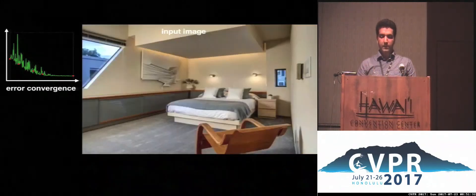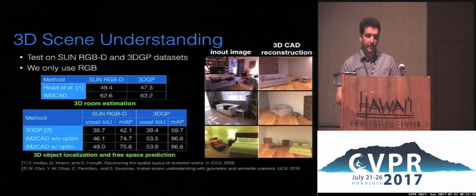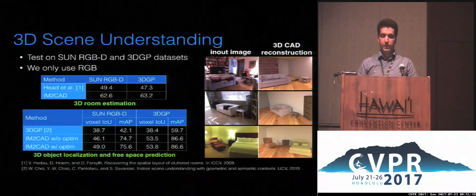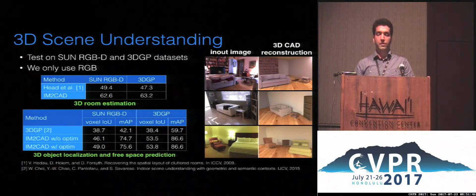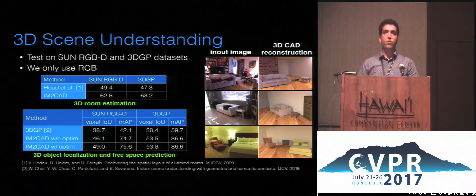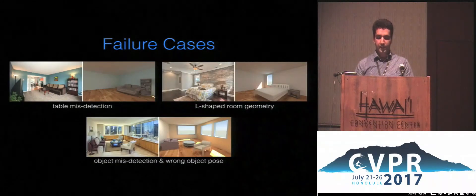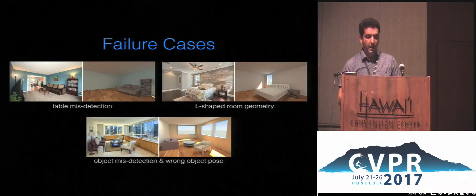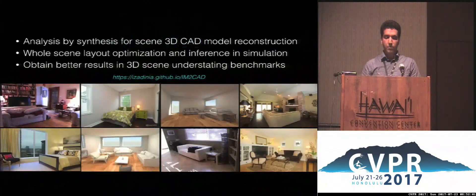We evaluated M2CAD on 3D scene understanding tasks using RGBD and 3D ground-plane datasets using only RGB input. We test on three tasks: 3D room layout estimation, 3D object localization, and free space prediction, showing that M2CAD obtains better results compared to previous works. We also present failure cases for object misdetection in cases of heavy clutter and occlusion, and approximate room layout estimation for non-cubic room shapes.